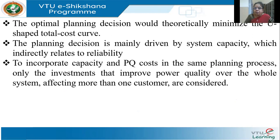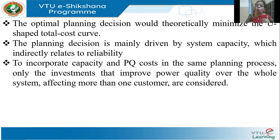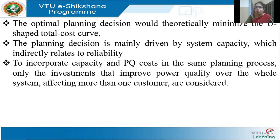The optimal planning decision is theoretically the minimum of the U-shaped total cost. The planning decision is driven by system capacity, which indirectly reflects reliability. To incorporate capacity and power quality costs — since I have not spoken about power quality yet in the conventional way of planning — if I want to add power quality issues into the planning process, I will have to take into account only those investments that improve the power quality of the whole system and affect the majority of customers.